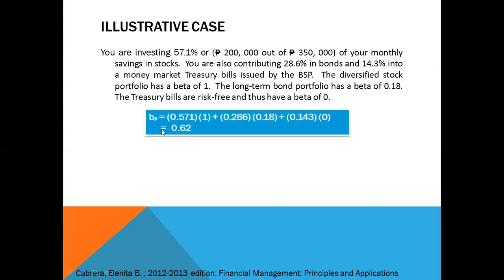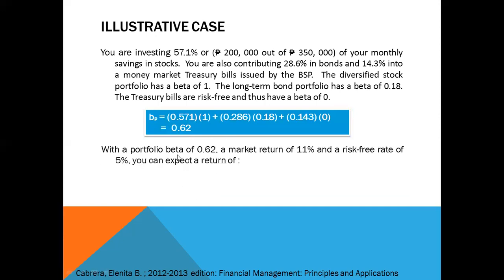The beta of this portfolio is therefore: 0.571 × 1 (the diversified stock portfolio beta) + 0.286 × 0.18 (the long-term bond portfolio beta) + 0.143 × 0 (treasury bills are risk-free). This gives a portfolio beta of approximately 0.62.